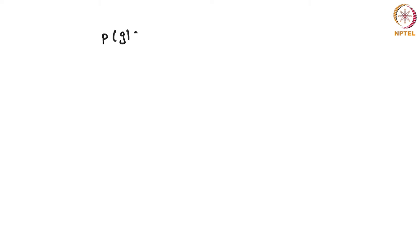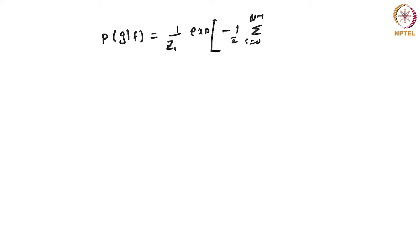P(G|F) can be written as 1/Z1 times exponential of minus the sum from i=0 to N-1 of (Fi minus Gi) squared divided by 2 sigma squared. There is a summation in the exponent.